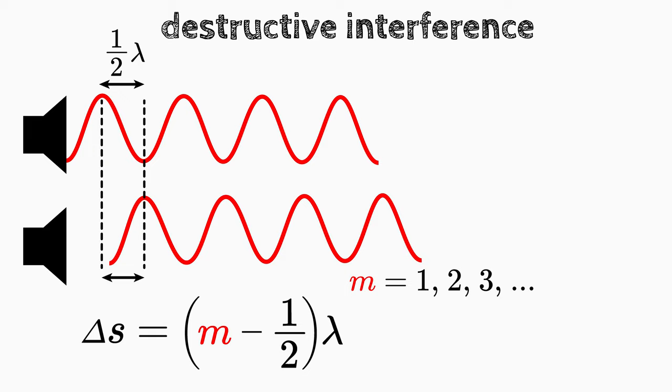The condition for destructive interference is then m minus 1 half times lambda.